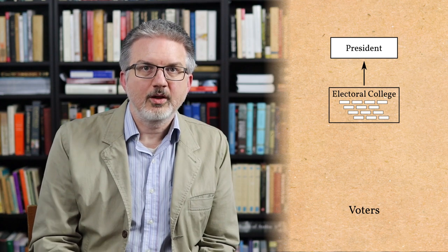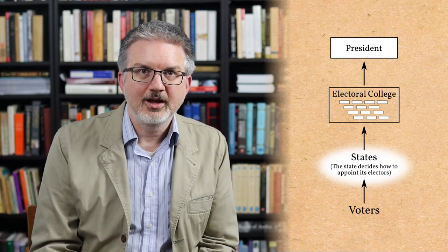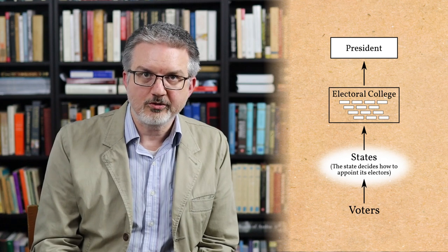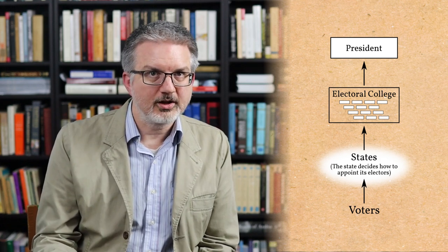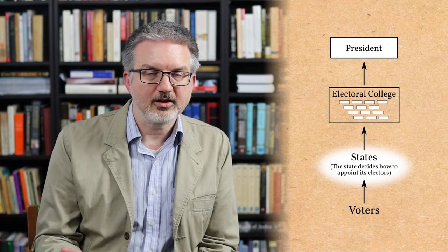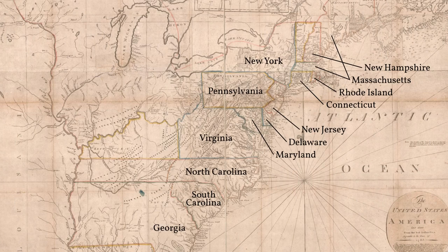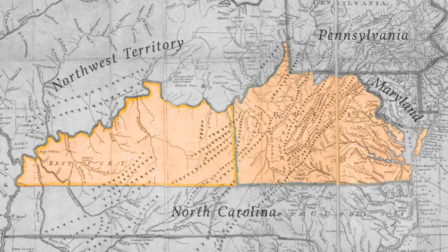According to the Constitution, each state is assigned a certain number of electors, and then it's up to that state how they choose their electors. In these early elections back in the 1700s and 1800s, it was common for states to have a variety of ways of choosing their electors — the state legislature could choose them, or they could leave it up to the governor. In Virginia in the 1789 election, they left it up to a popular vote. Virginia was assigned 12 electors, the legislature divided Virginia into 12 districts, and in each district the eligible voters would choose one elector.